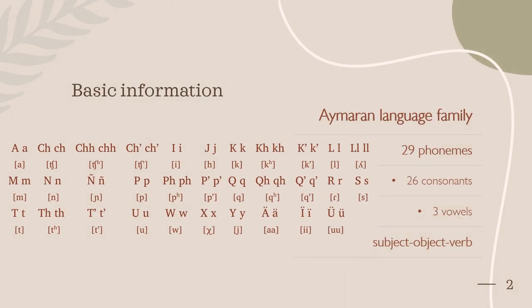Aymara is part of the Aymara language family. It has 29 phonemes, which can be seen to the left. Of these phonemes, there are 26 consonants and 3 vowels, and it has a subject-object-verb system.